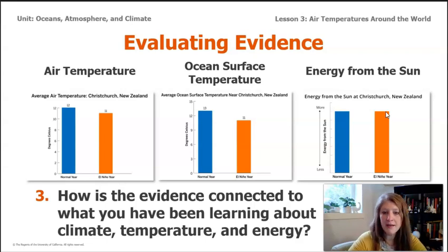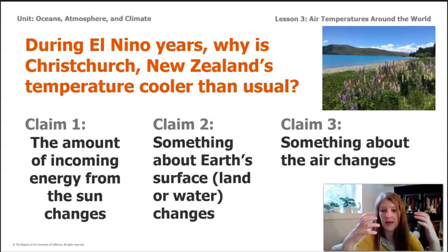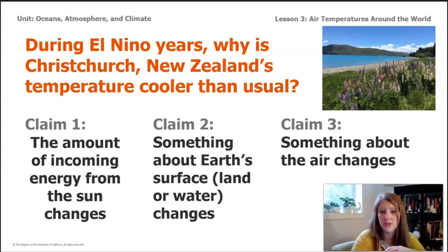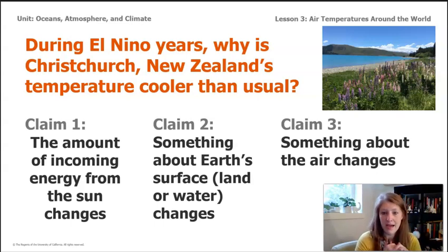It's time to think back about the question we're trying to solve for the Farm Council of New Zealand — why during El Niño years is Christchurch, New Zealand's temperature cooler than usual? When we first started this unit, we had different ideas: maybe it had to do with the amount of energy from the sun, something about the surface, or something about the air. Do the graphs support or go against any of these claims? Pause the video and write some notes or talk to a friend. Ask yourself: which claims are supported by the evidence, and which are not?